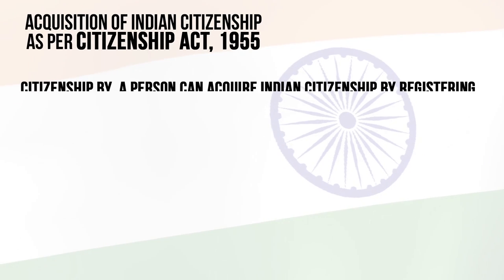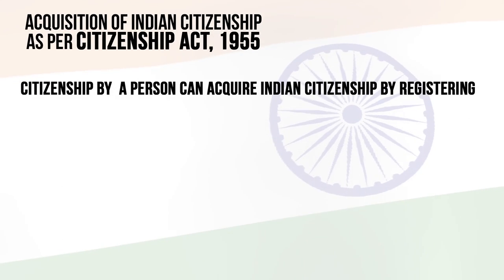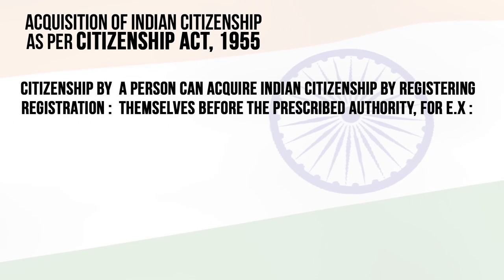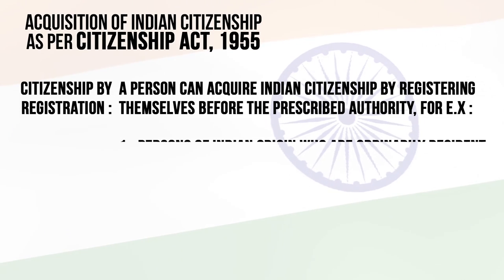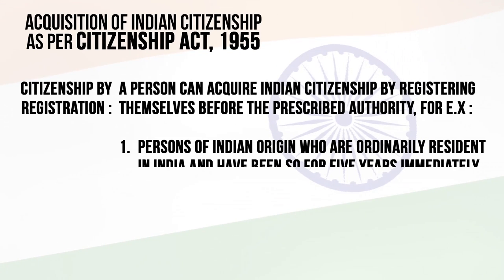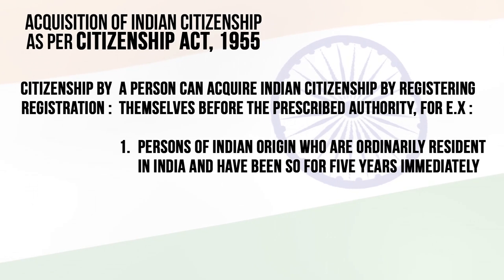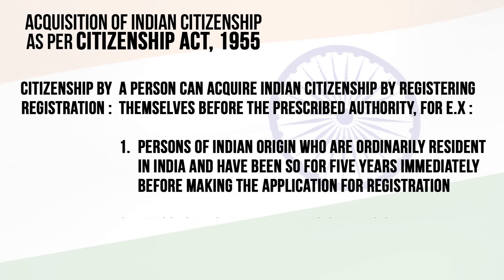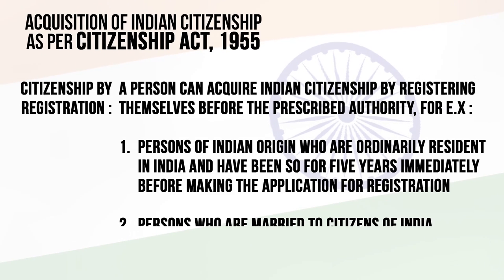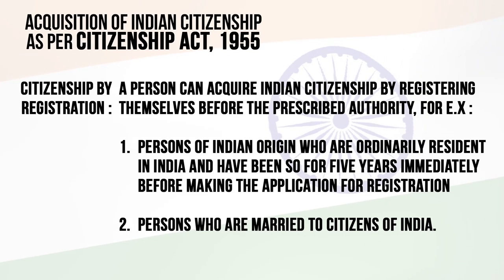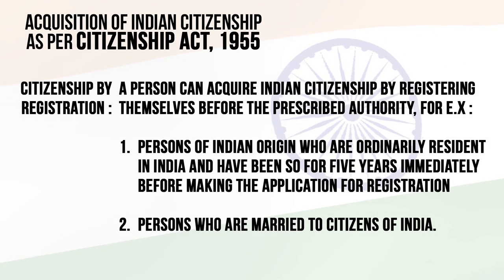Citizenship by registration: A person can acquire Indian citizenship by registering themselves before the prescribed authority. For example, persons of Indian origin who are ordinarily resident in India and have been so for five years immediately before making the application for registration. Persons who are married to citizens of India are another example.